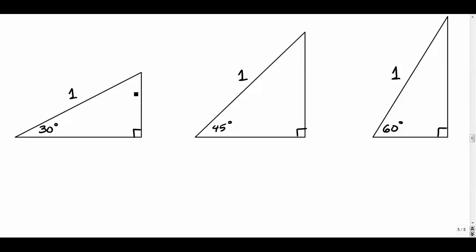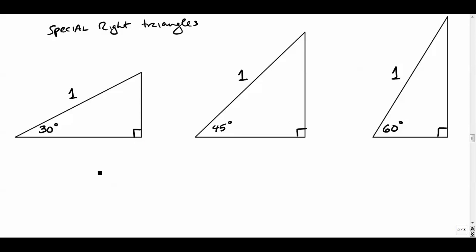We need to remember our special right triangles. There are two types: a 30-60-90 and an isosceles 45-45-90. Each one has a very easy ratio of sides. No matter how big or small the triangle is, if it's a 30-60-90 the sides have to fall into a specific ratio.